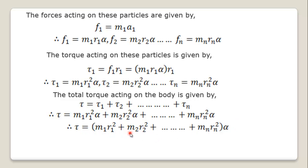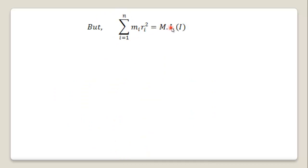Taking alpha as common: torque = (m1r1² + m2r2² + ... + mn·rn²) × alpha. But this summation is nothing but the moment of inertia I. So torque is equal to I into alpha. This is the expression for torque acting on a rotating rigid body. Here I is the moment of inertia and alpha is the angular acceleration.